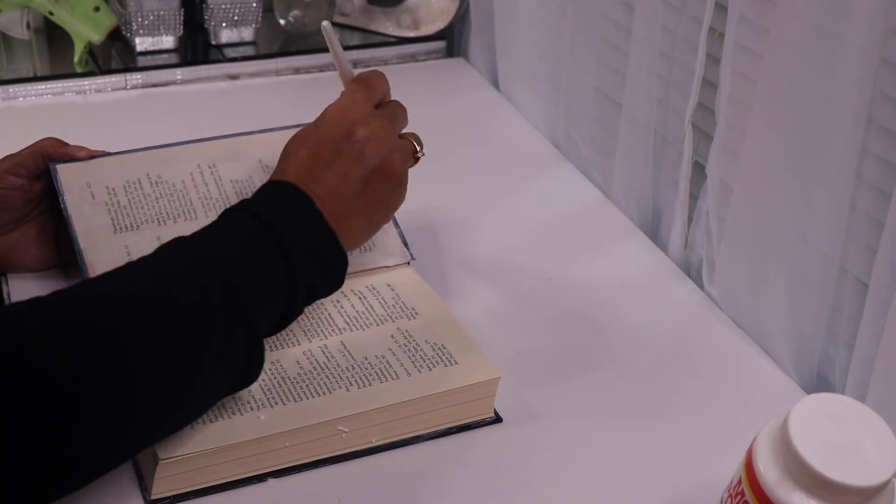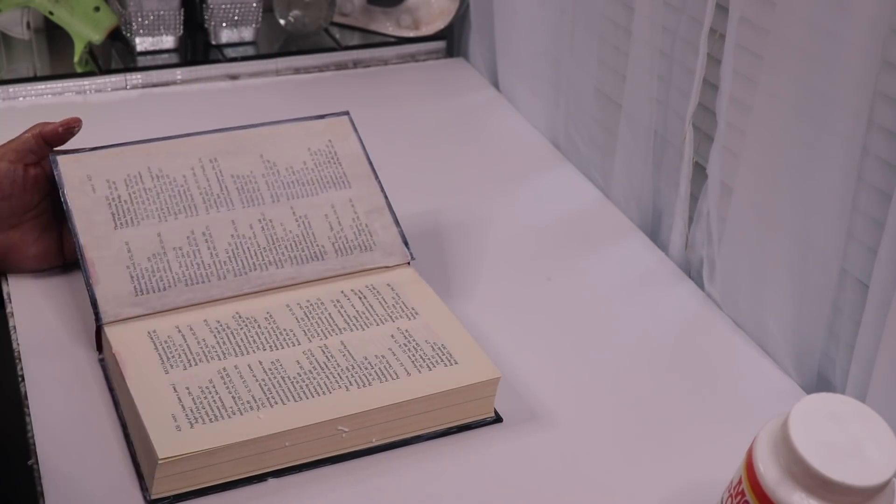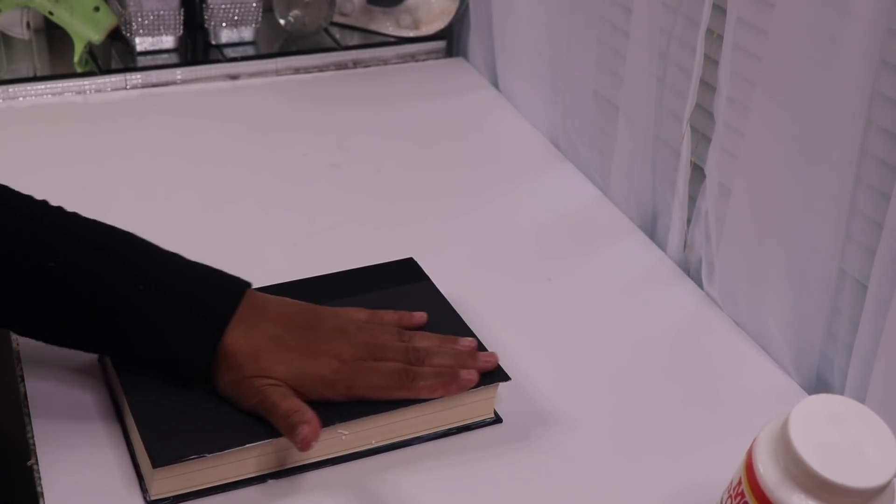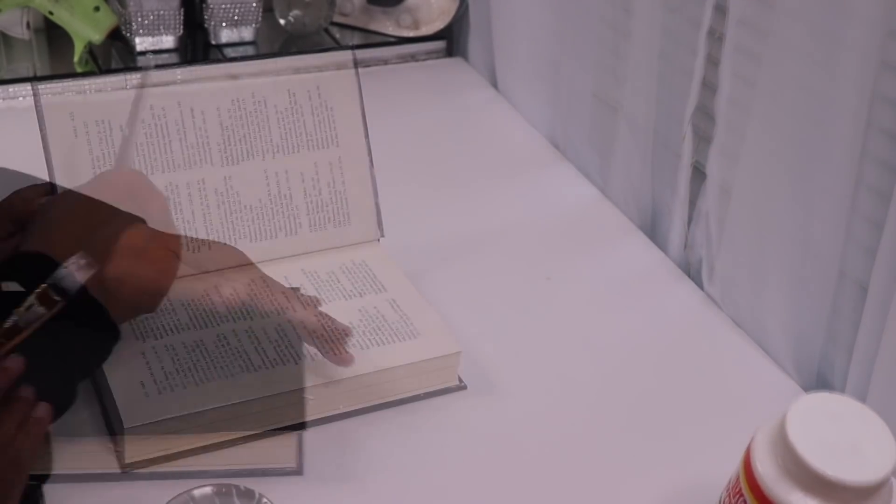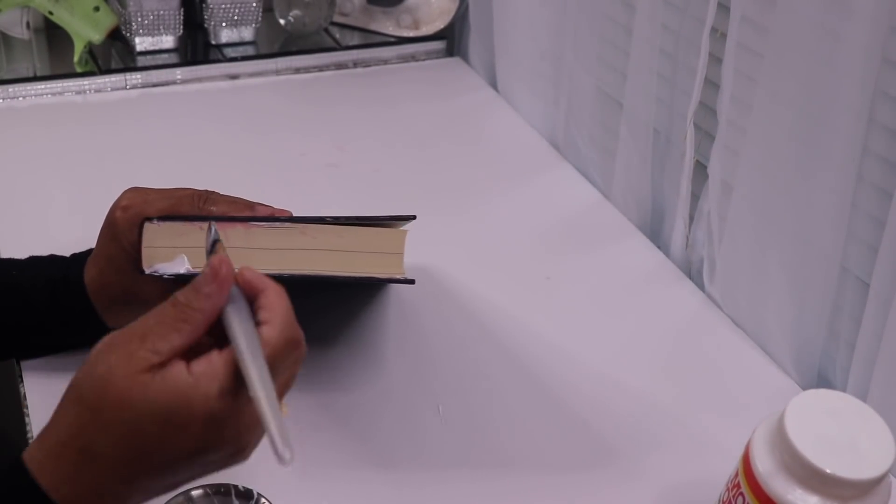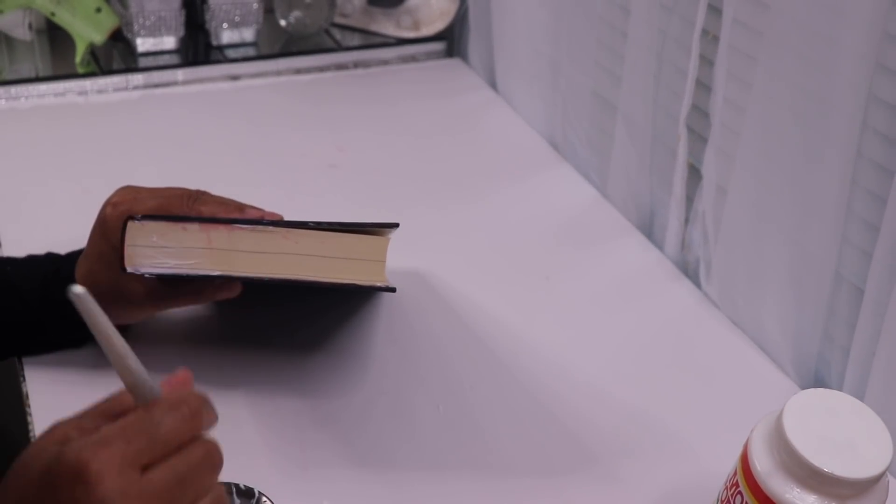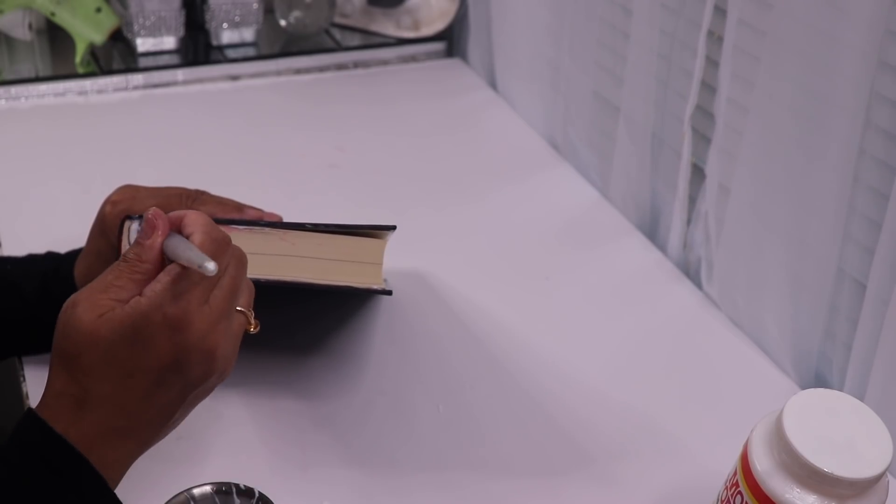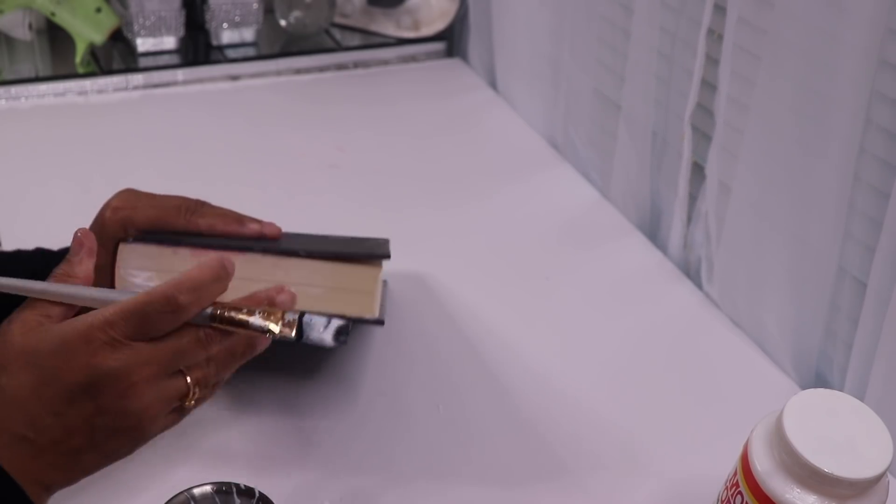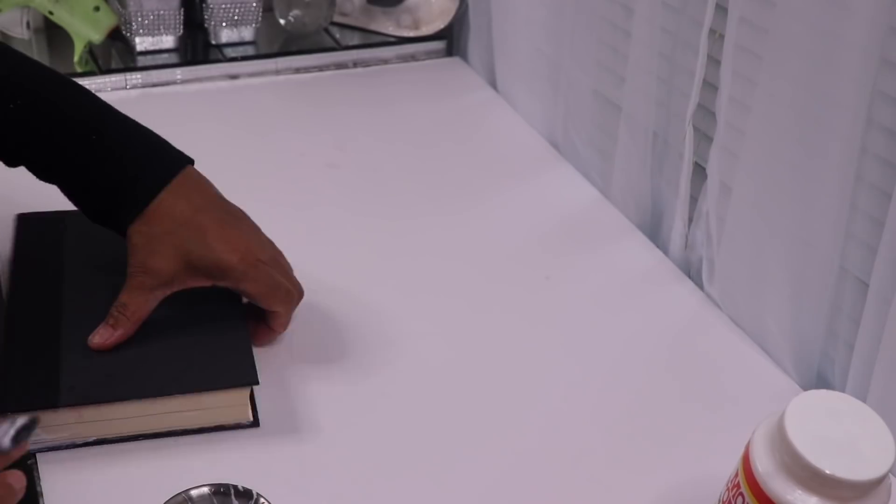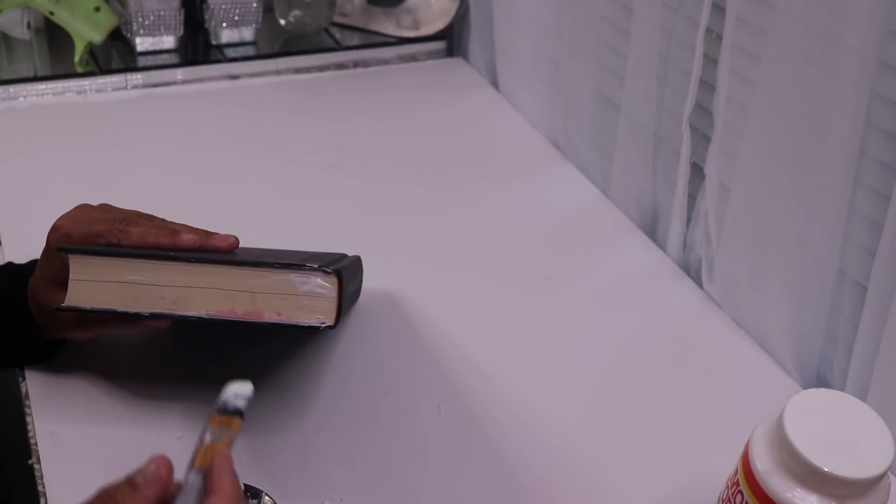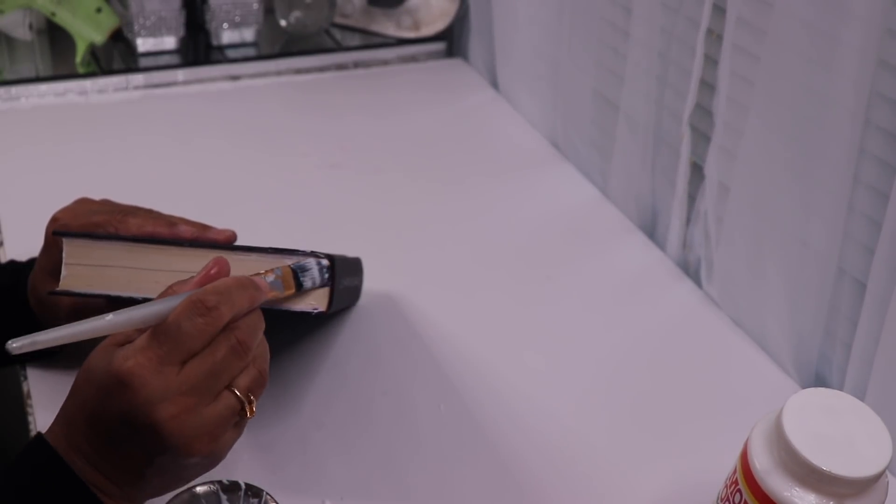Now that I'm done gluing those first pages to the cover, I'll go ahead and glue the entire book together. And I'll do that by holding the book closed and then brushing more Mod Podge on the outside of the pages. But when I do this, I'm making sure that it's a smooth application.